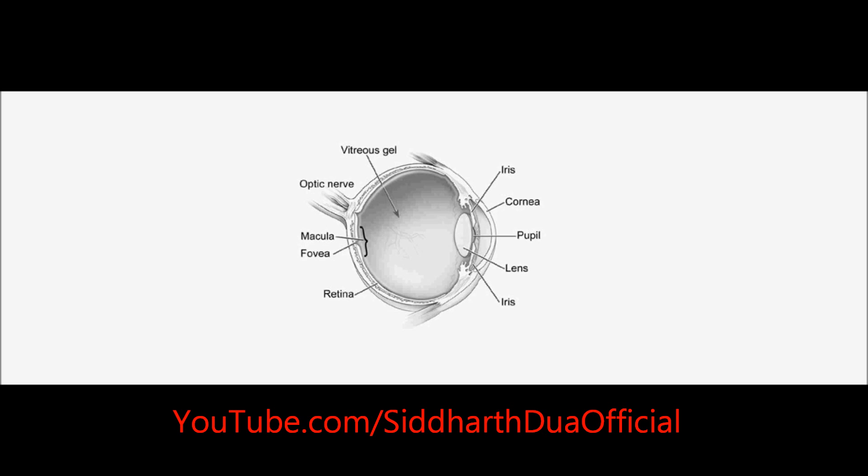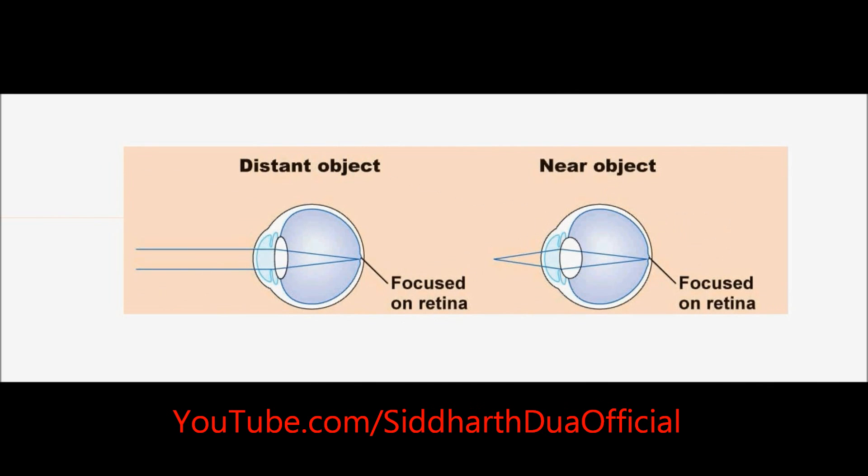The change in curvature of the eye lens can thus change its focal length. When the ciliary muscles relax, the eye lens flattens. Hence, the focal length increases and you are able to see distant objects.